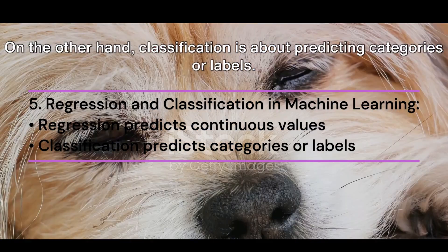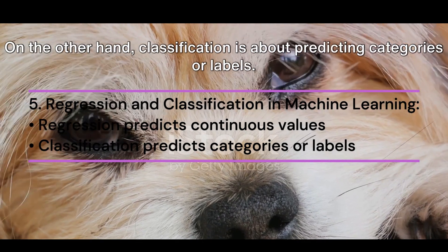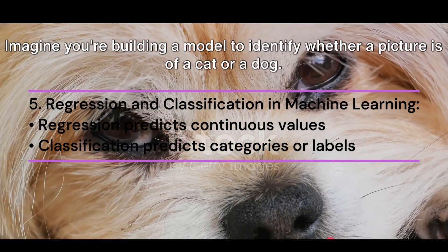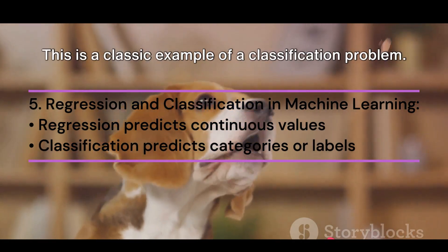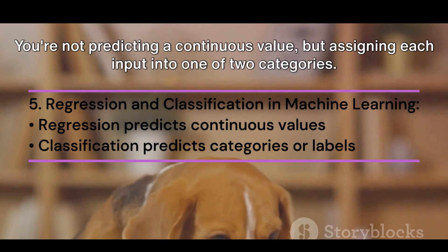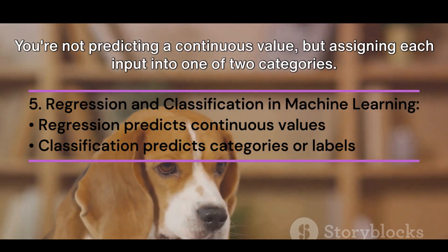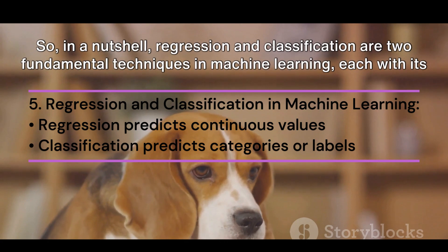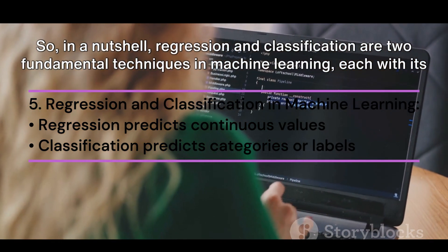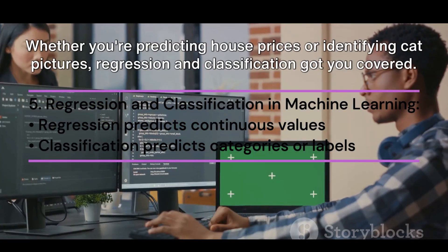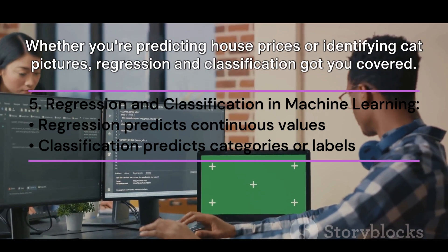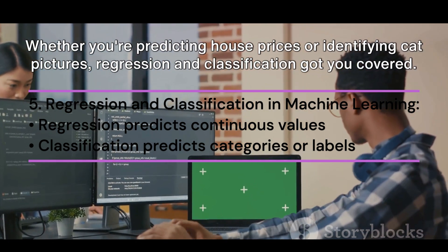On the other hand, classification is about predicting categories or labels. Imagine you're building a model to identify whether a picture is of a cat or a dog — a classic example of a classification problem. You're not predicting a continuous value, but assigning each input into one of two categories. In a nutshell, regression and classification are two fundamental techniques in machine learning, each with its own unique use cases. Whether you're predicting house prices or identifying cat pictures, regression and classification have you covered.